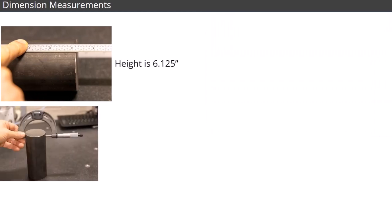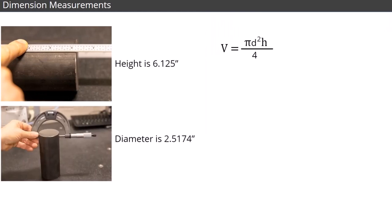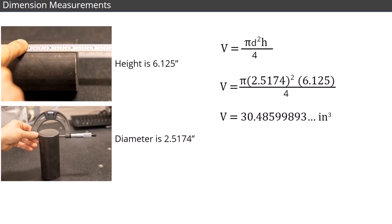Now, follow along as we make our volume calculation. Once we finish rounding, we find that the volume for this piece of scrap bar stock is approximately 30.486 cubic inches.